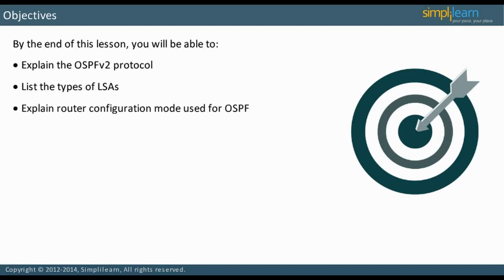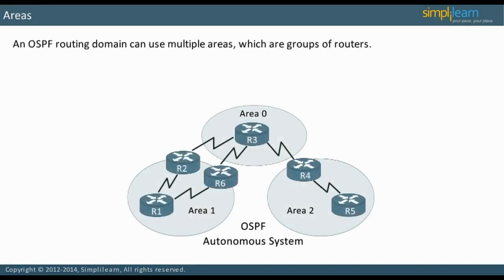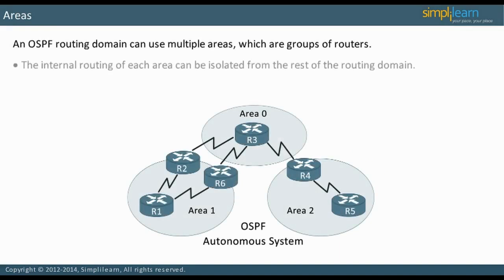An OSPF routing domain can use multiple areas, which are groups of routers. The internal routing of each area can be isolated from the rest of the routing domain. This makes the routing table smaller and reduces routing protocol overhead.